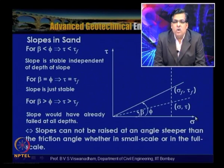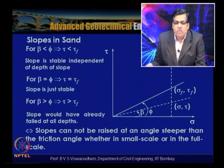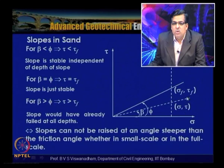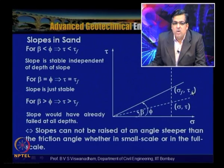For beta less than phi, tau is less than tau_f. Whatever the normal stress sigma may be, tau will always be less than tau_f. For beta equal to phi, tau equals tau_f — this line joins the failure envelope. For beta greater than phi, tau is greater than tau_f, so the slope would have already failed at all depths.